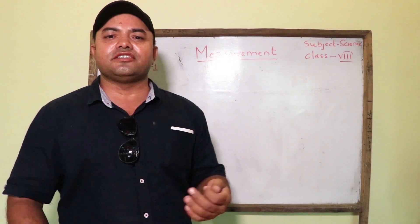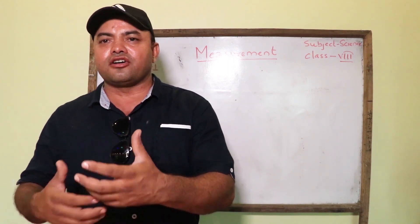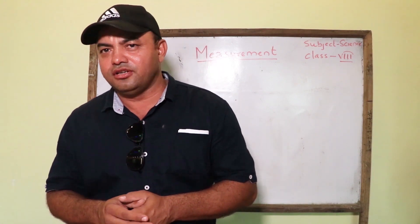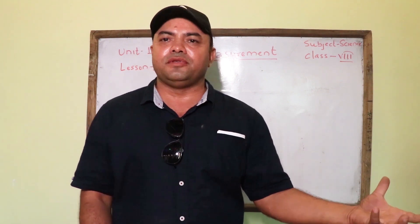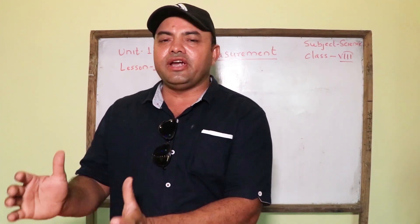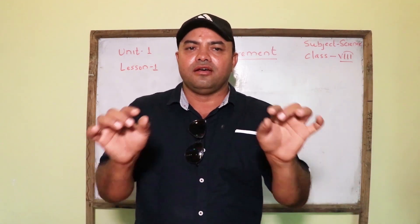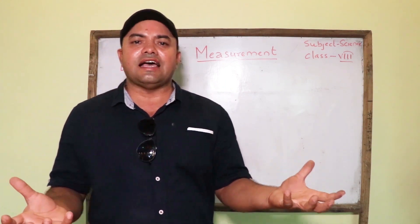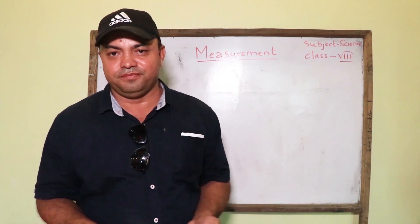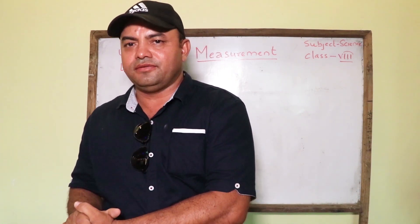Measurement is actually the process of comparison in which an unknown quantity is measured or compared with a known standard quantity. For example, in order to buy one kg of potatoes from a general store, the shopkeeper places potatoes in one pan of the beam balance, which is the unknown quantity. In the other pan, a one kg standard weight is kept, which is the known standard quantity. When the two pans are horizontal and balanced in the middle of the beam balance, the mass of the potatoes is measured. This is the comparison of the unknown quantity, potatoes, with the known standard quantity — the standard weight.